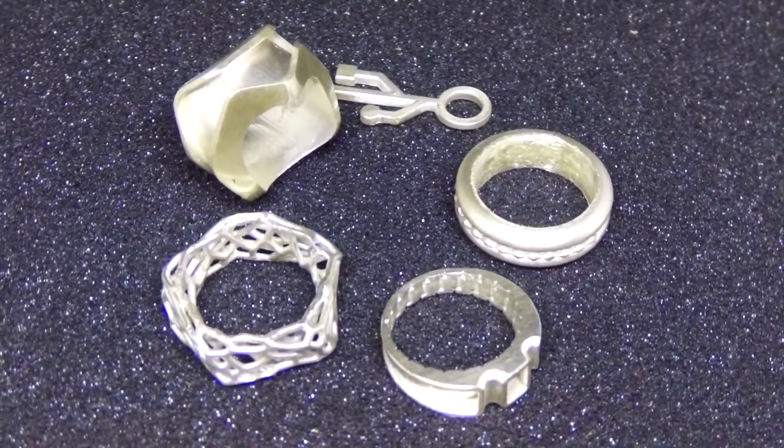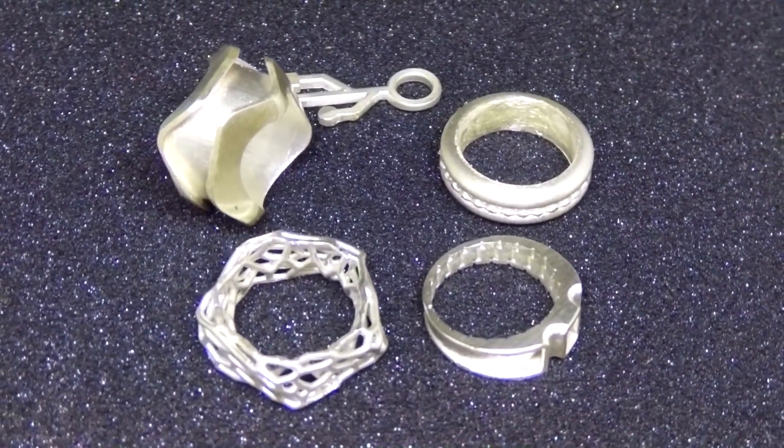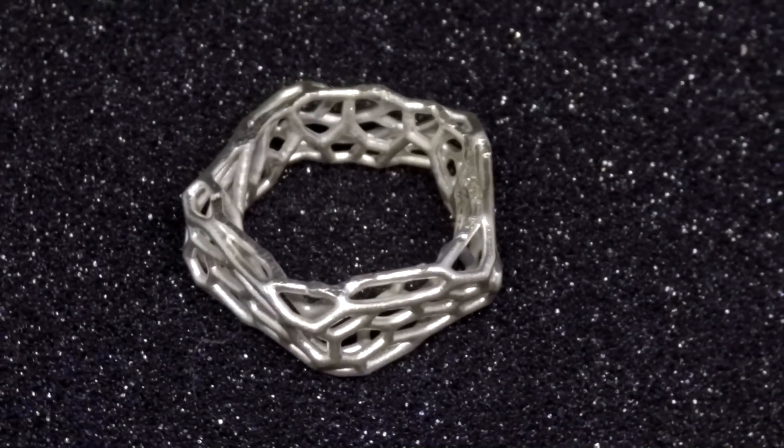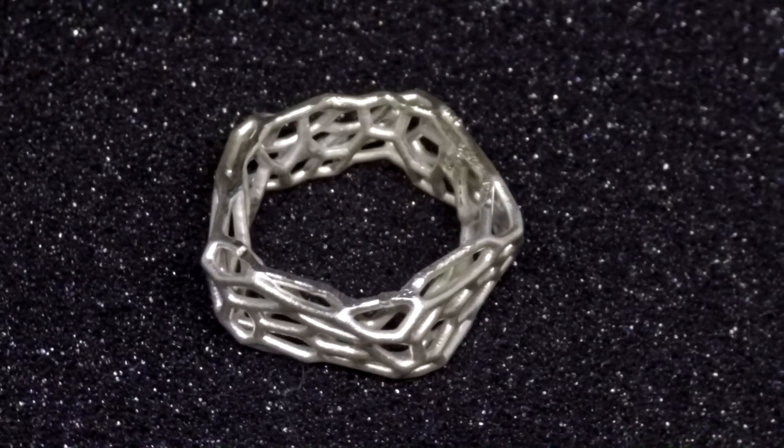So here's the final result with a fair amount of sanding and polishing. The coral ring created in Mesh Mixer is still my favorite. It could do with a little bit more polishing on the top surfaces, but apart from that, it looks pretty cool.